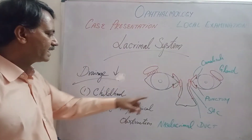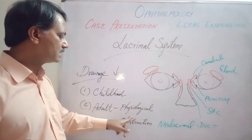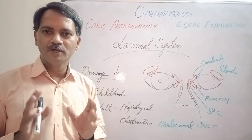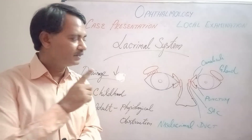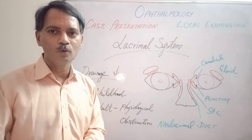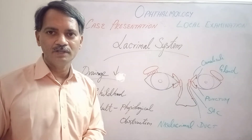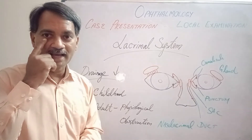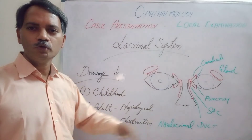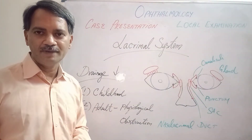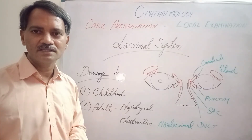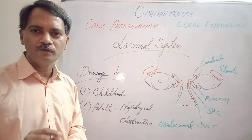In adults, the lacrimal drainage system may malfunction due to two reasons: physiological or obstructive. Physiologically, if the orbicularis oculi muscle is weak — as in elderly people — the lacrimal sac pump system fails, and lid laxity may also contribute. Obstruction can occur due to inflammation in the lacrimal drainage pathway leading to stricture formation, or due to stones in the lacrimal drainage system blocking drainage.